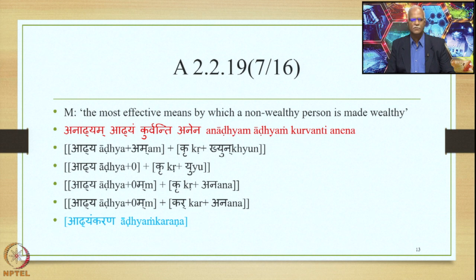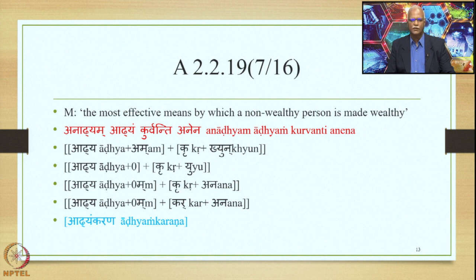We turn this into an Alavukika Vigraha: Adhya plus Am, plus Kru plus Khyon. This becomes a Samasa, then a Pratipadika, after which Supodhatu Pratipadika applies and deletes Am. So we get: Adhya plus 0 plus Kru plus U (since Kha and Na are Anubandhas — Kha by Tashakvatadhyate and Na by Halantyam — both deleted by Tasya Lopaha, leaving U). Next, the augment Ma is added to the Purva Pada. Then U is substituted by Ana by Yuvoranakau (7.1.1). So we have: Adhya plus 0 plus Ma plus Kar plus Ana, where Kru is substituted by Kar.